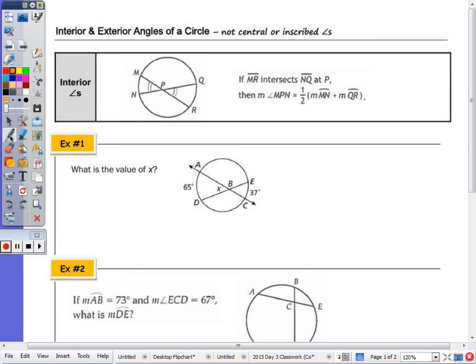For interior angles, if MR and NQ intersect at P, we have a pair of congruent vertical angles. I can find the measure of one of those angles by taking half the sum of the measure of arc MN, as this vertical angle intercepts that arc, and the other vertical angle intercepts arc QR. So I can find the measure of one of those interior angles by taking half the sum of those two arcs.